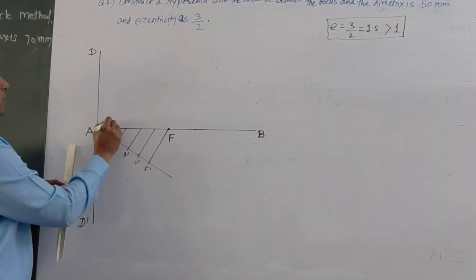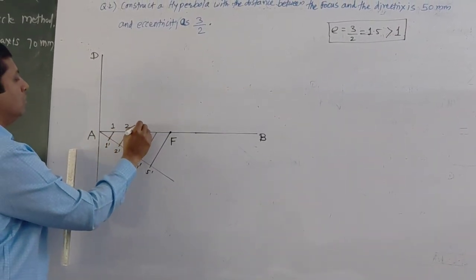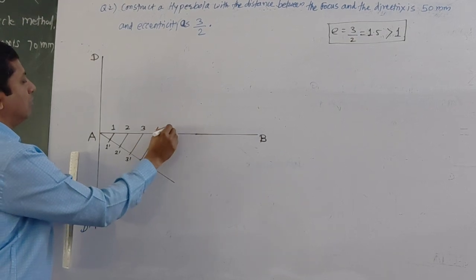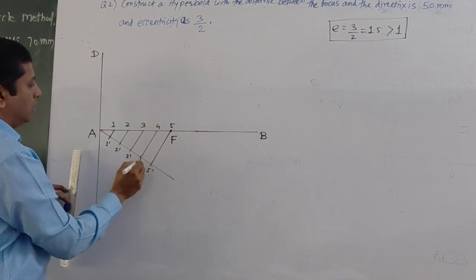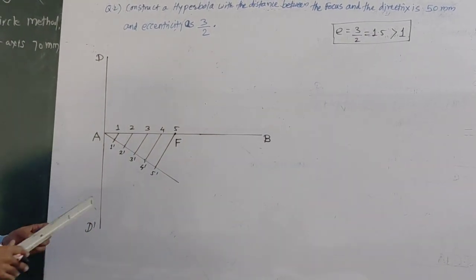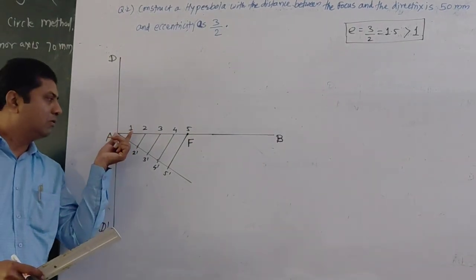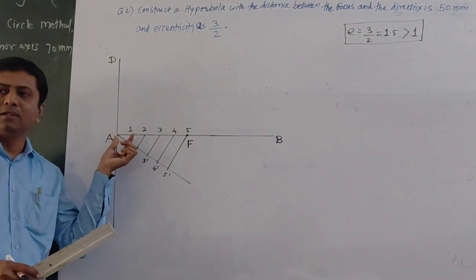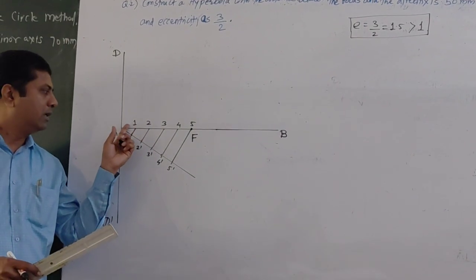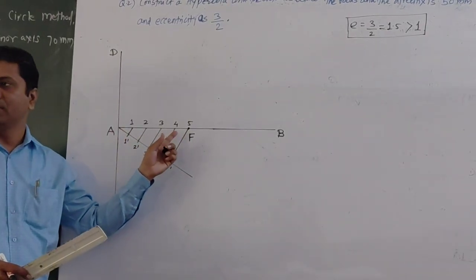Give the numbers 1, 2, 3, 4 to the division points. Now the line is exactly divided into 5 equal parts. If you measure one division, it comes to 10mm — so the divisions are at 10, 20, 30, 40, and 50mm.